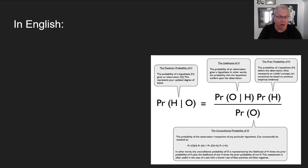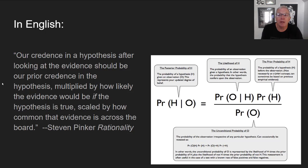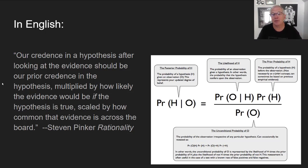Here's another way to understand it — I'm lifting this passage from Steven Pinker's book Rationality. Our credence in a hypothesis after looking at the evidence should be our prior credence in the hypothesis, multiplied by how likely the evidence would be if the hypothesis is true, scaled by how common that evidence is across the board. What we're doing is folding in and scaling our belief in the light of new information, depending on how connected the observation is to the hypothesis.